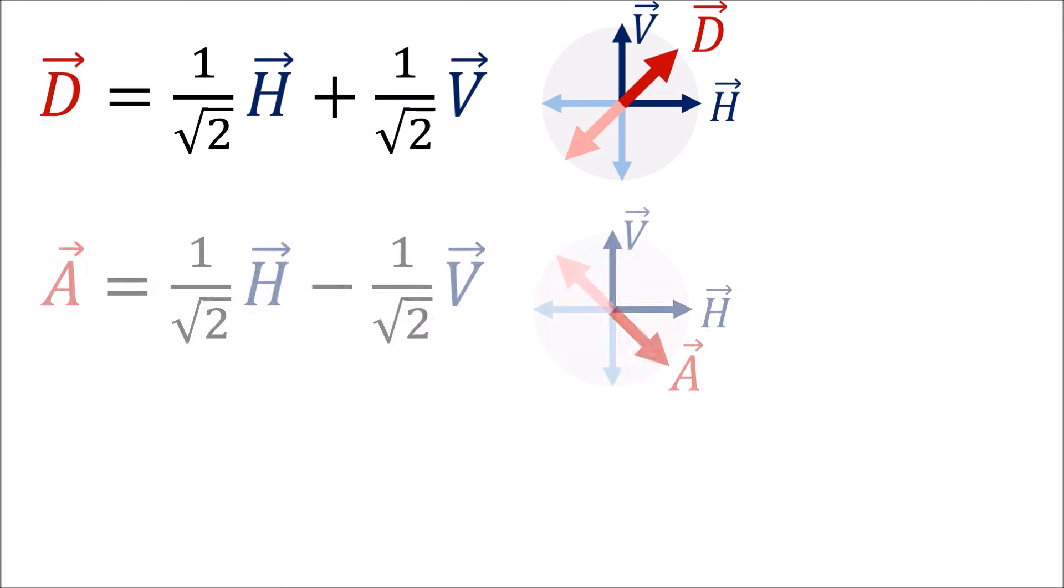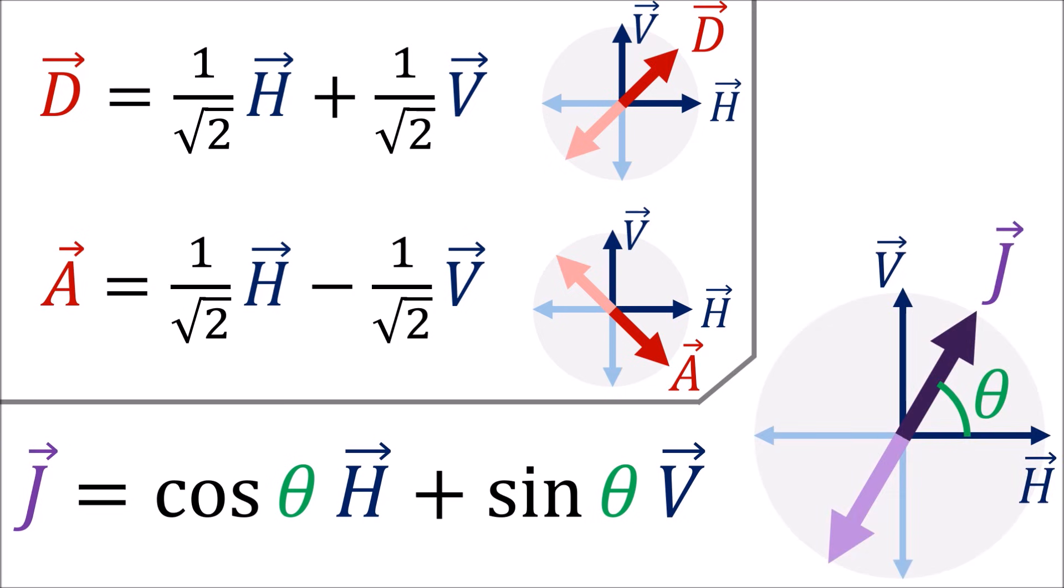We can get the D and A polarizations by adding H and V together in the right amounts. In fact, we can make the wave's polarization have any angle on this circle if we set the coefficients in front of H and V properly. But there are actually more polarizations that we still haven't seen yet.